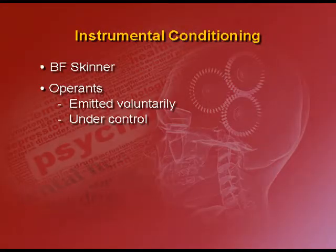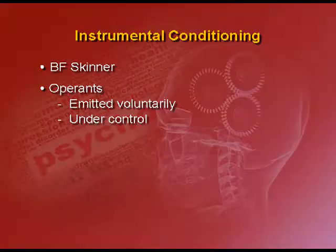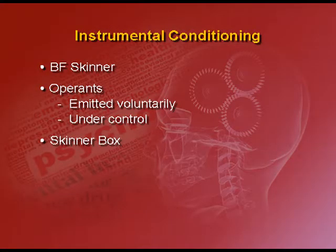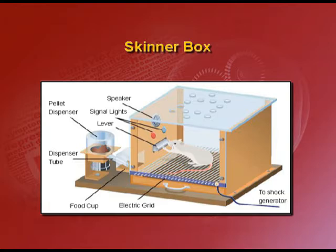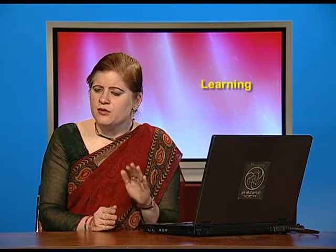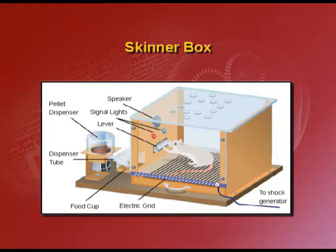The experiment used by B.F. Skinner to establish the concept of operant conditioning was conducted in a small laboratory. The subject used was a rat, kept in a Skinner box. This box had a small funnel-like tube in which food pellets were inserted, and there was a lever attached at the bottom of this funnel. If the lever was pressed, the food pellets would come down and fall into a plate. The rat could then eat them from that plate.